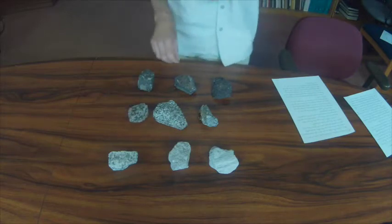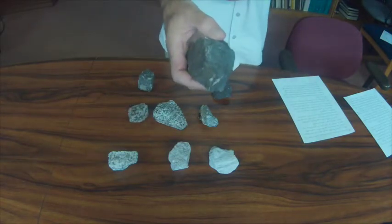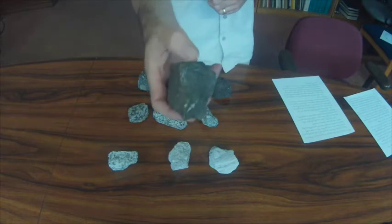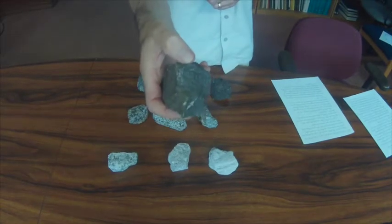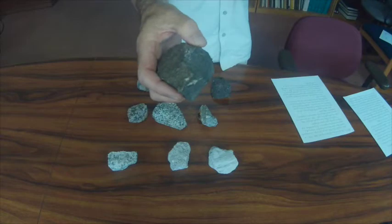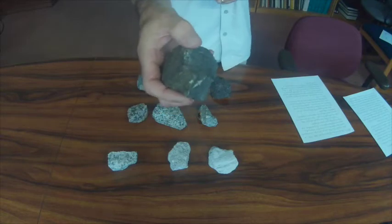On the other hand, rocks that are aphanitic, the mineral grains are not visible to the naked eye, and you can then use color as an indicator of general composition.